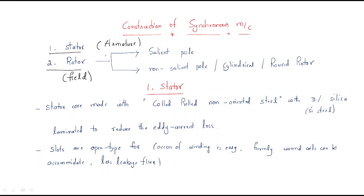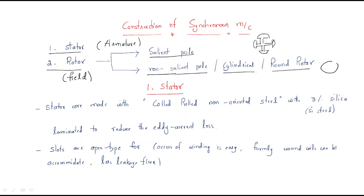We can construct a synchronous machine using these. The rotor is of two types: one is the salient pole rotor and another one is the non-salient pole rotor, also called the cylindrical rotor or round rotor. Saliency means the poles are projected outward. In the non-salient case, the rotor looks cylindrical. Based on this construction, the rotor will be divided.